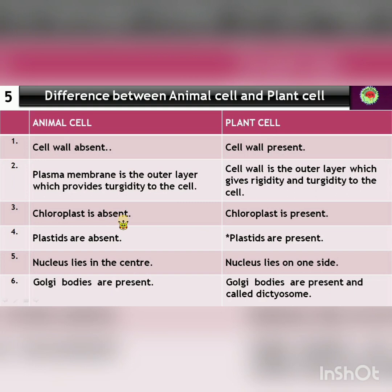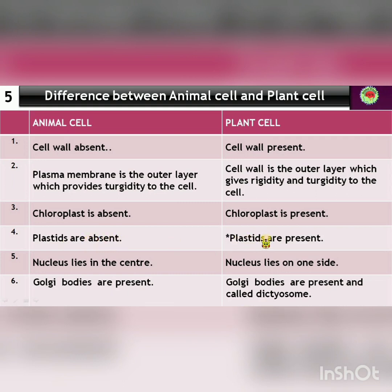The third difference: chloroplast is absent in animal cell because it is a characteristic of plant cells, and chloroplast is present in plant cell. The fourth point, and it is an important one: plastids are absent in animal cell while plastids are present in plant cell.